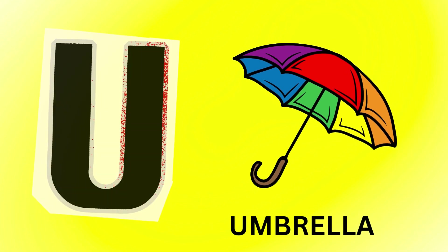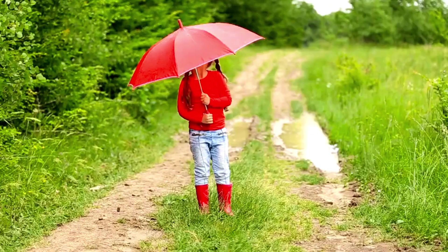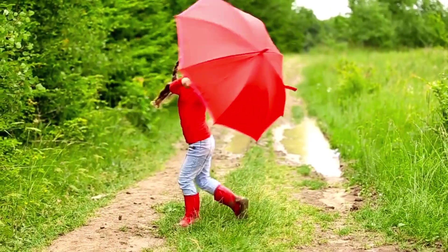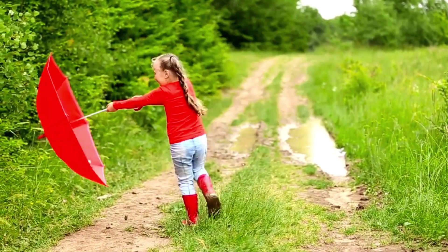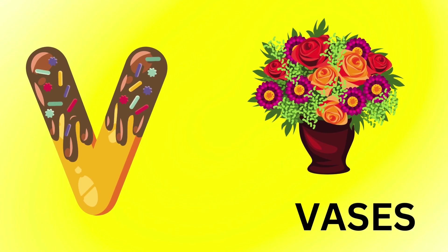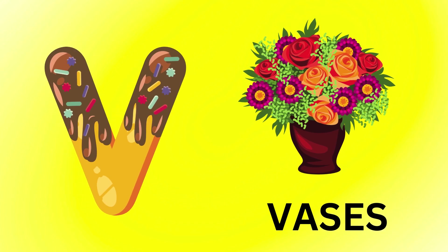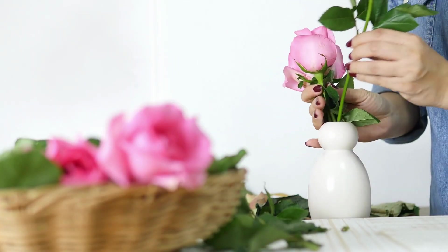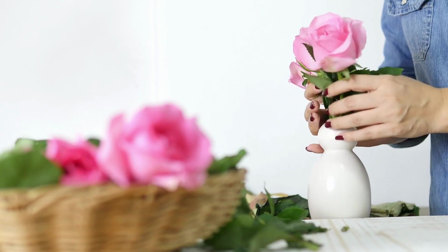U is for Umbrella. Umbrella U. V is for Veggies. Veggies. W is for Watch.